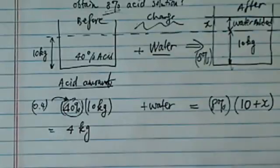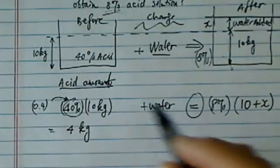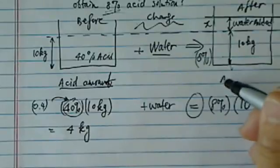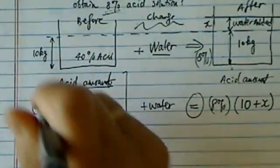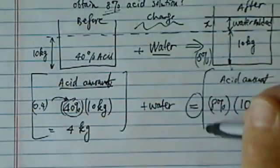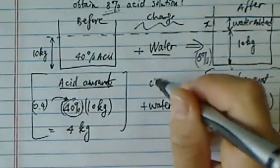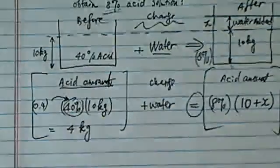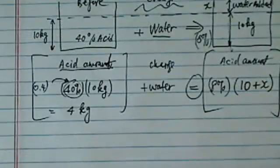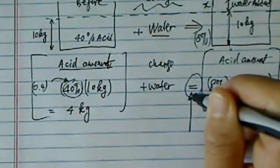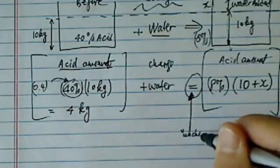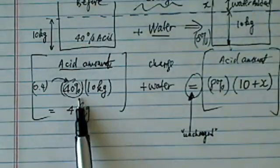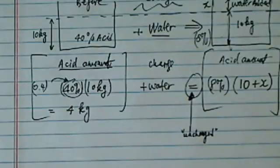However, here's the important part. You've got to find out what's unchanged. Acid amount here and acid amount here does not change because in between, here's the before system, here's the after system, here's the change. We only change the water amount, not the acid amount, that's the equal sign. Equal sign literally means it's unchanged. Okay, so acid amount does not change because we simply added water.